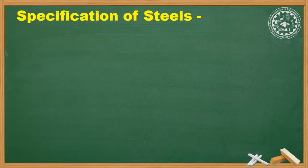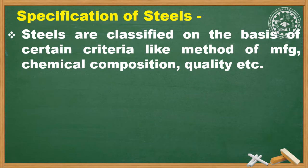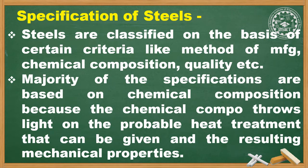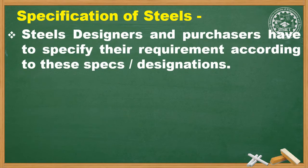Specification of steels. Steels are classified on the basis of certain criteria like method of manufacturing, chemical composition, quality, etc. The majority of specifications are based on chemical composition, because chemical composition throws light on the probable heat treatment that can be given and the resulting mechanical properties. Steel designers and purchasers have to specify their requirements according to these specifications or designations.